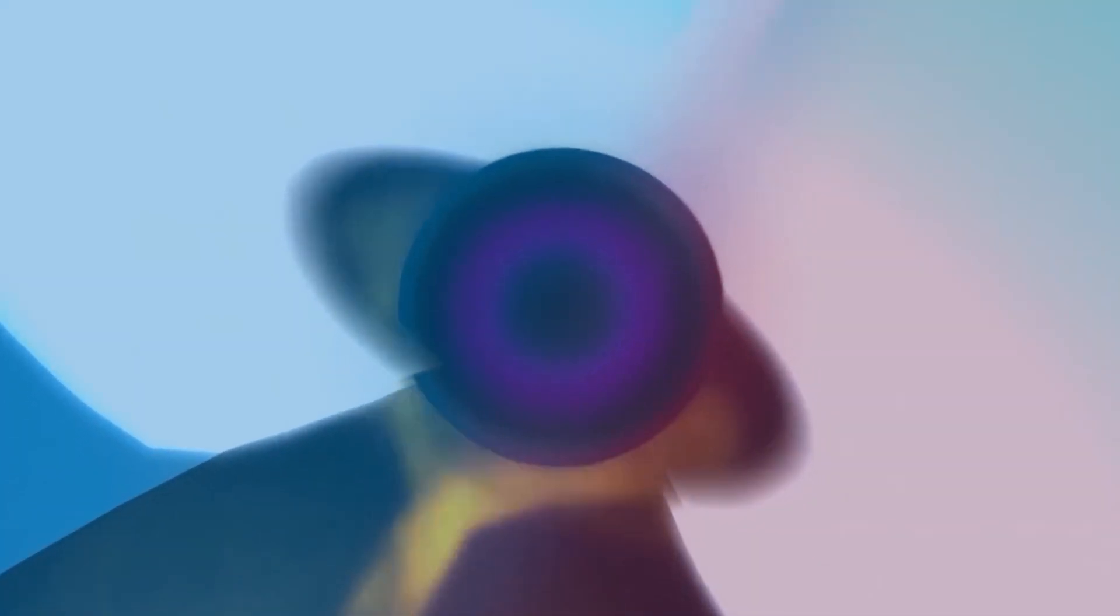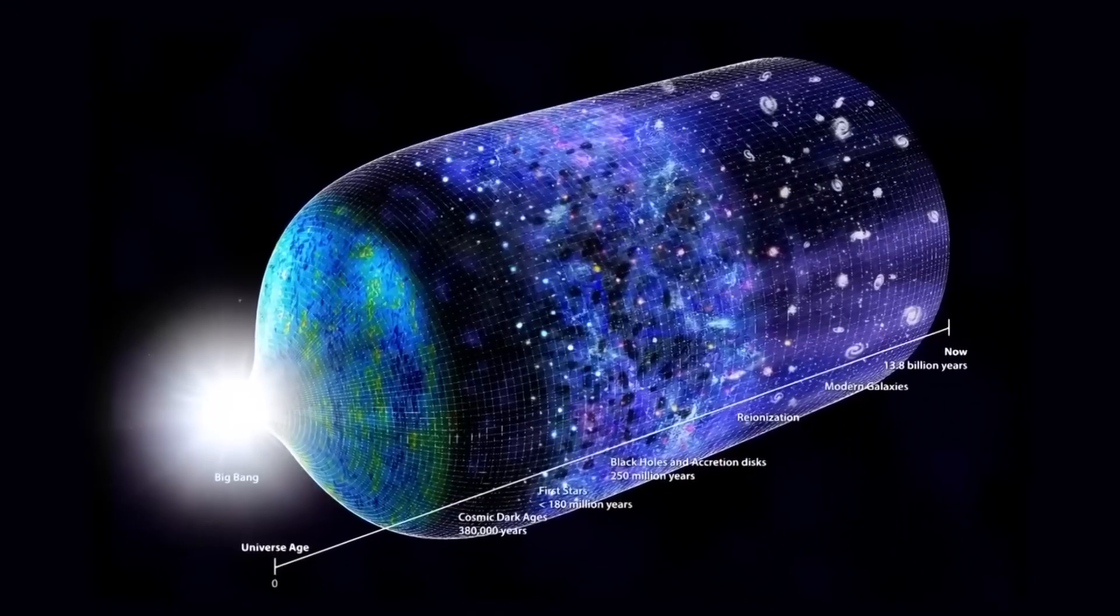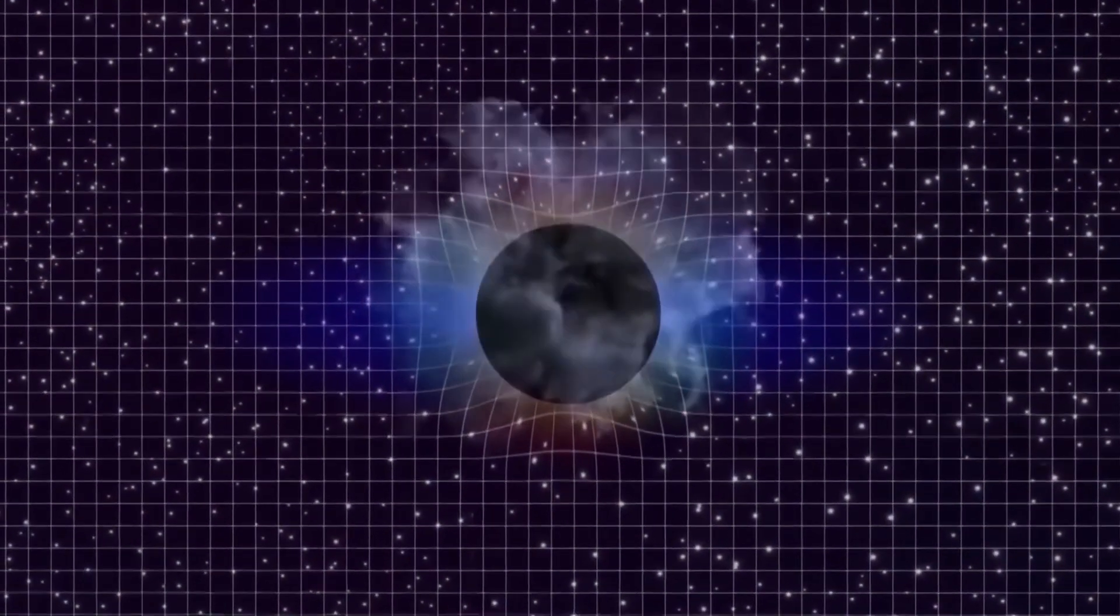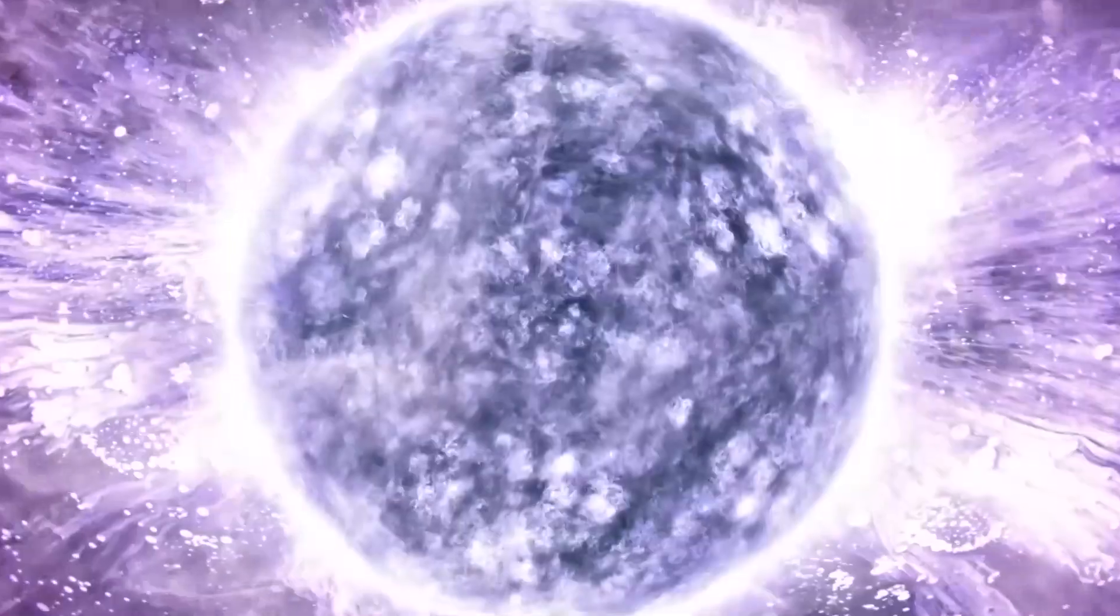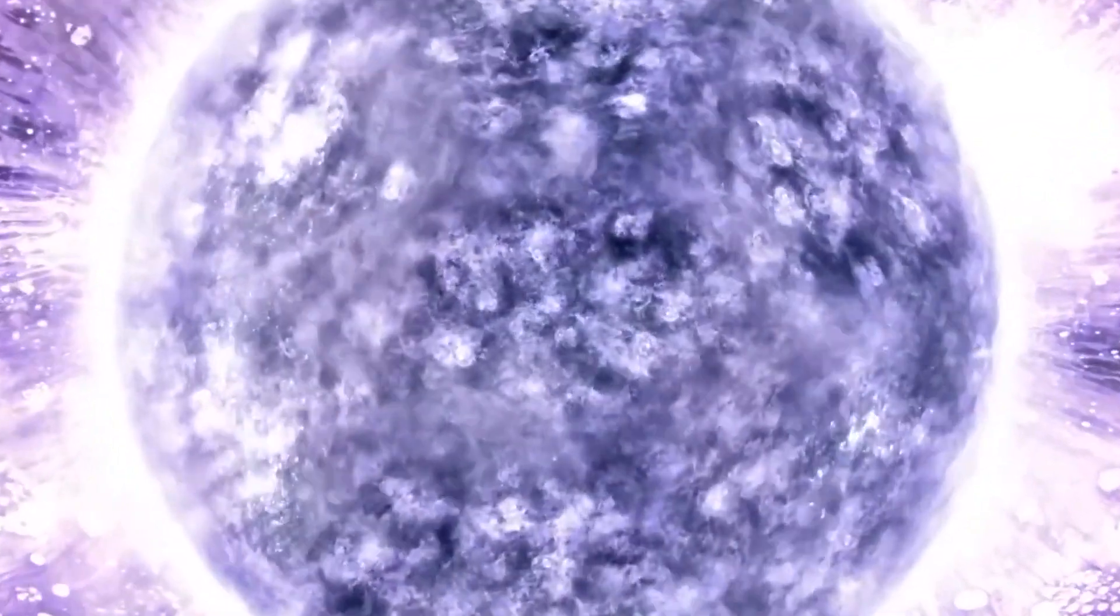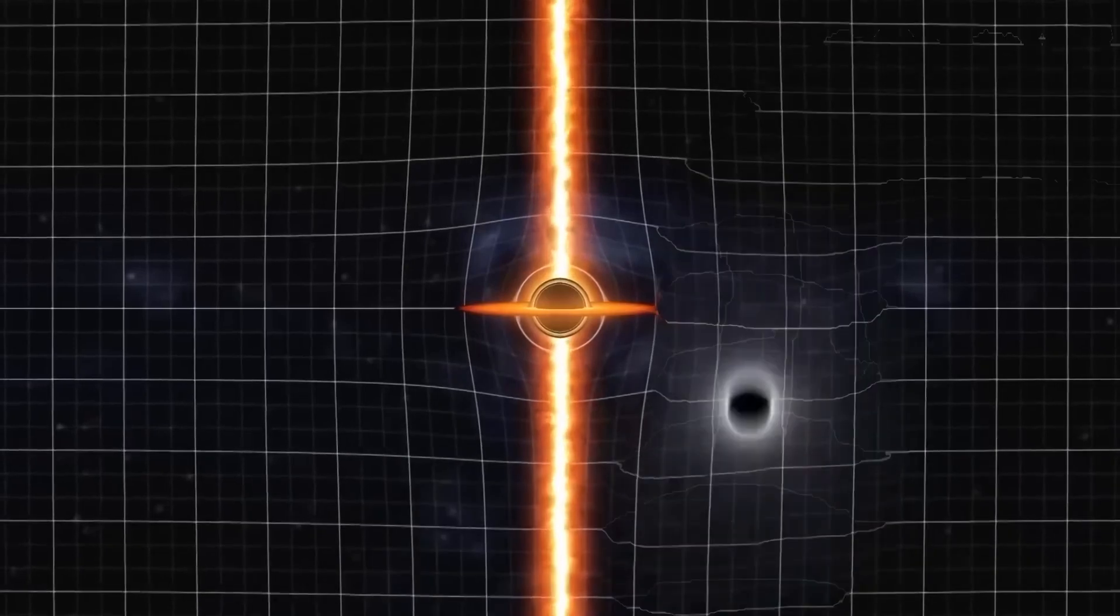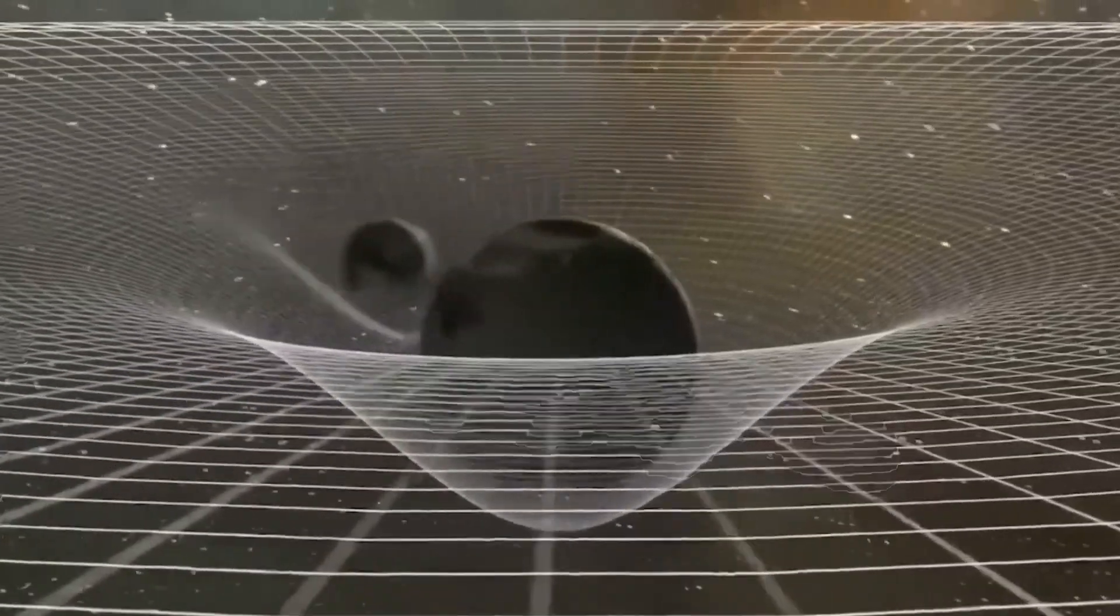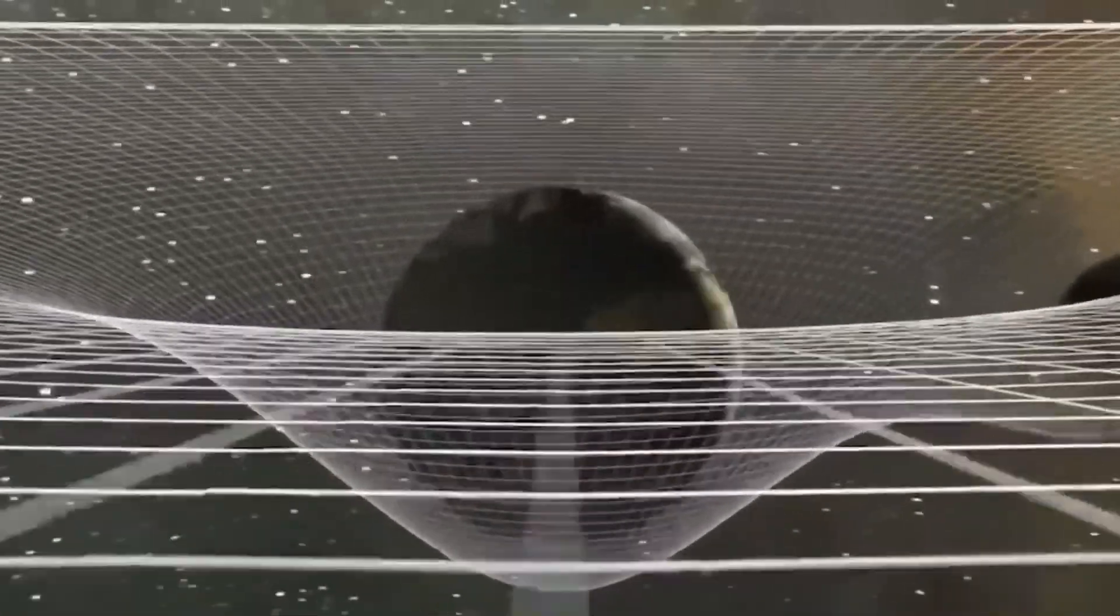Objects with mass warp space-time, creating a gravitational field that affects the motion of other objects. To visualize this, we can imagine a sheet of paper representing space-time. If we place two points onto the paper and draw a line between them, we are representing how objects move through space-time.